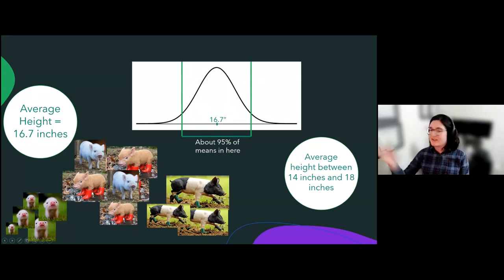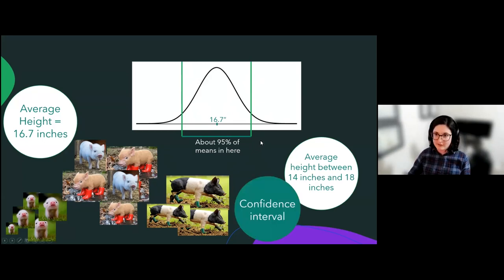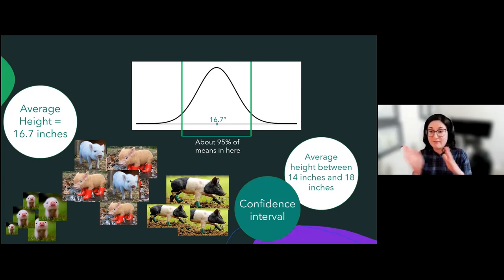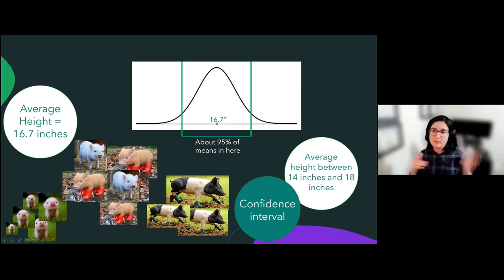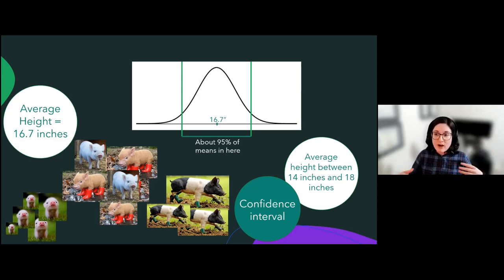This is really useful because we can figure out what that bell curve is going to look like for our particular sample using the number of pigs in our sample and how close together or spread apart the heights are. We can stick our mean in the center and figure out what the middle 95% of this bell curve is going to be — finding a lower value and an upper value that will contain 95% of the means in this bell curve. Let's say for us the lower bound is 14 inches and the upper bound is 18 inches. This is what we call a confidence interval.